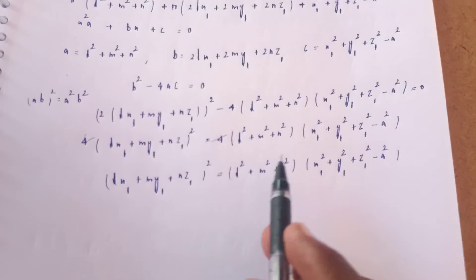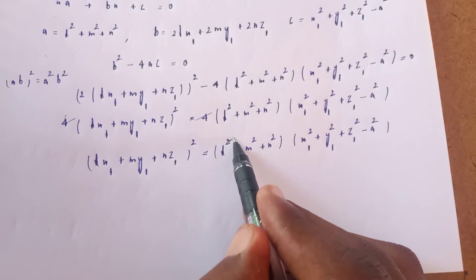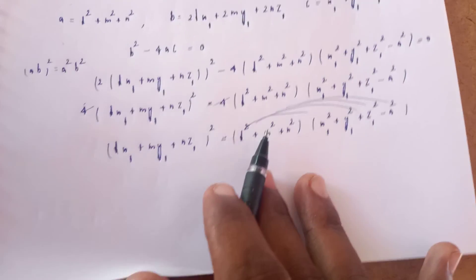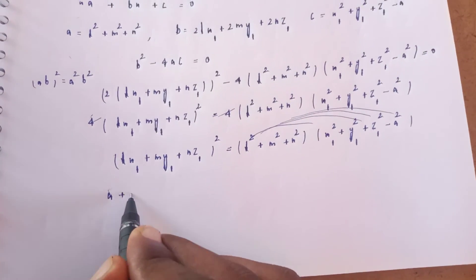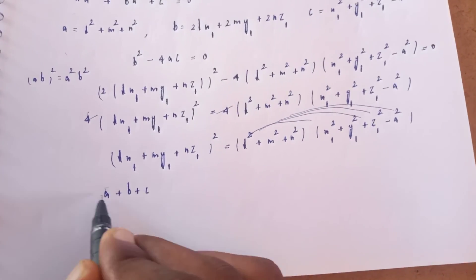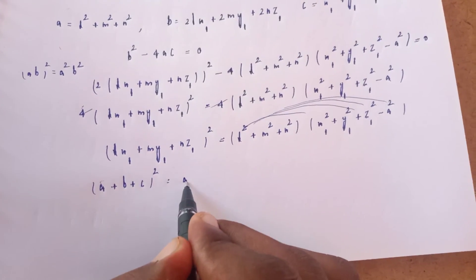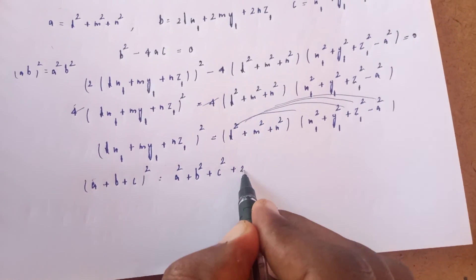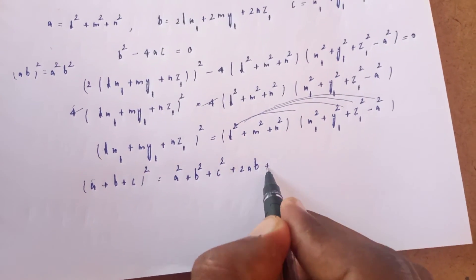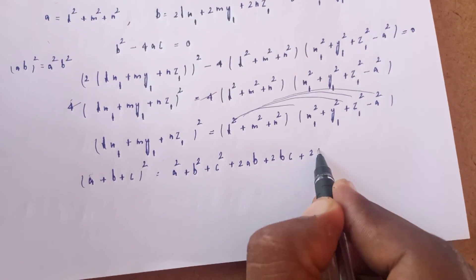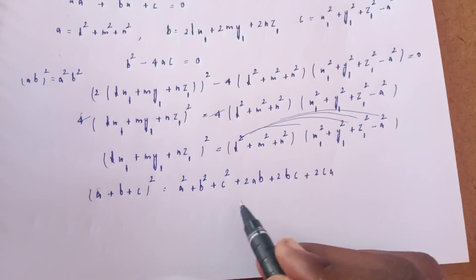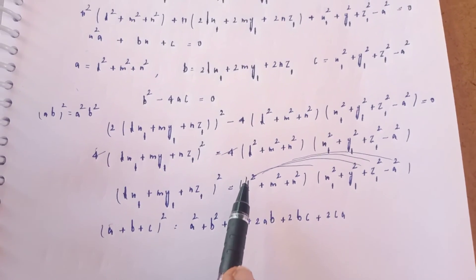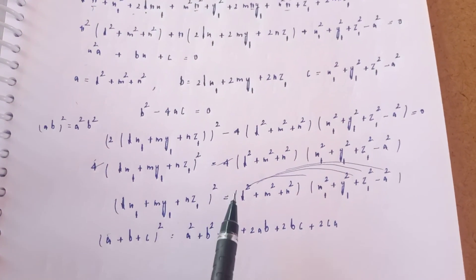Expanding further using the (A+B+C)² formula: A² + B² + C² + 2AB + 2BC + 2CA. This gives the final equation of the enveloping cylinder. This is a very important result — please note it carefully. This is a simple problem, practice it.